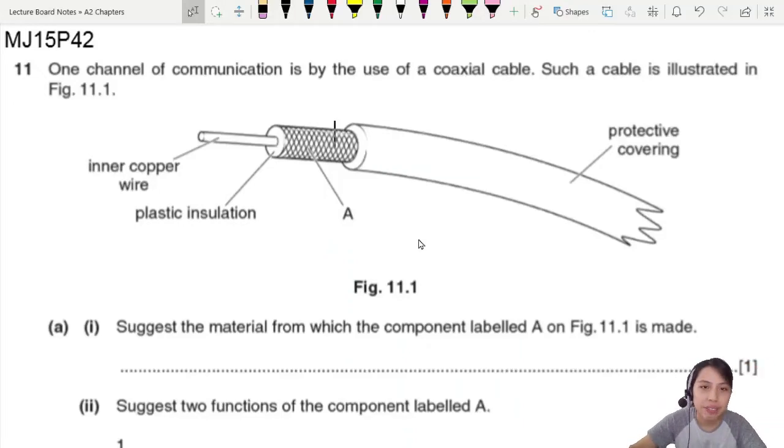MJ15 paper 4, variant 2, question 11. Look at this beautiful coaxial. One way of sending your signal, channel of communication, is using a coaxial cable. That's what this thing is. This is a diagram.